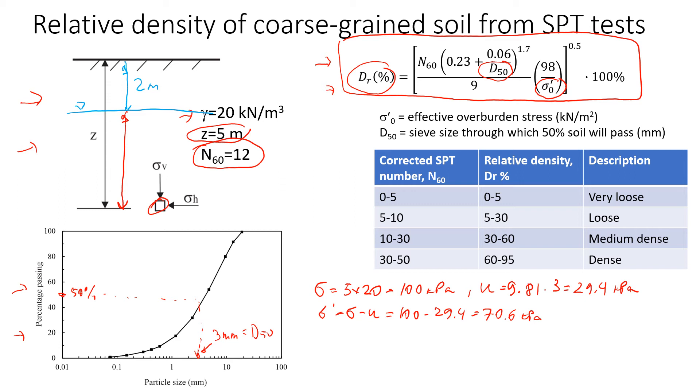So now we're going to use this complex correlation formula. Let's write down what we have. So this is the relative density that we're going to find, and we're going to use percentage. That's why here we multiply by 100%. Now let's write down what we know. We know that N60 is 12.